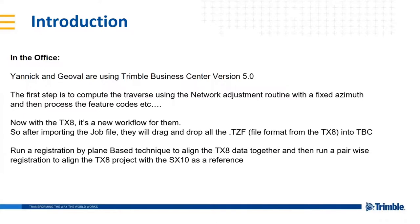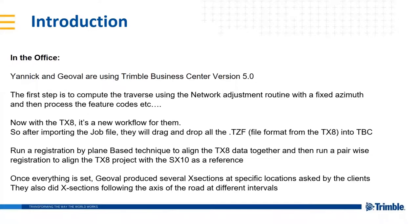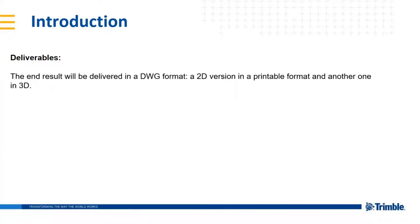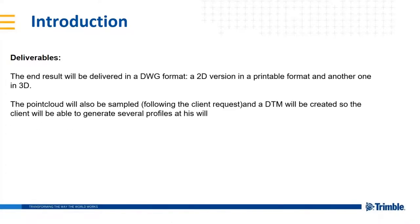They do registration with the TX8, then pairwise with the SX10, which serves as the reference skeleton of the survey. They can produce cross sections at different intervals for the client. It's very important to know the intersection between walls and the road surface. They can create CAD points inside TBC or use scan-to-CAD functions at specific intervals, and at the end they deliver a DWG — a 2D version to print — plus a 3D one. The client also requested a sampled point cloud and DTM.